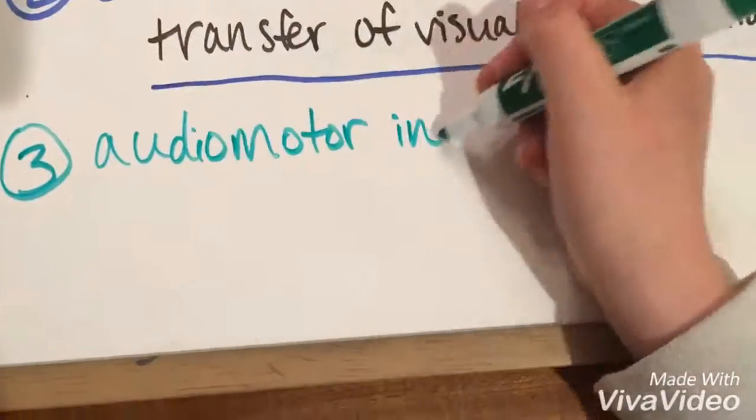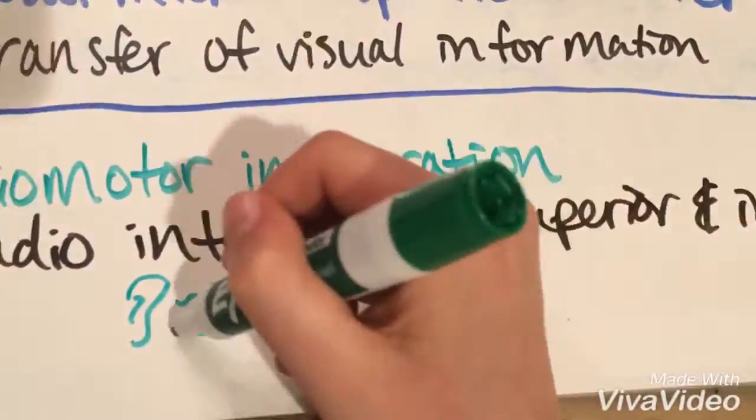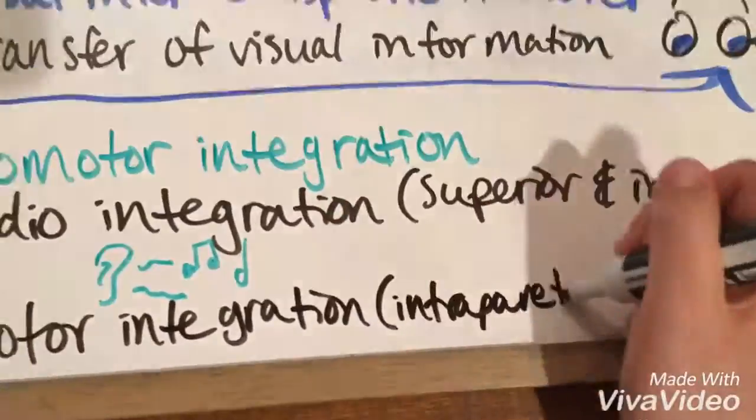Secondly, callosal interhemispheric transfer controls the transfer of visual information. Finally, music training stimulates audiomotor integration.